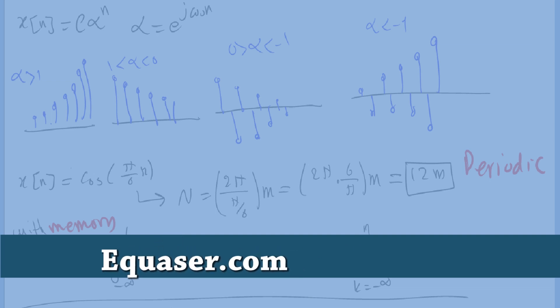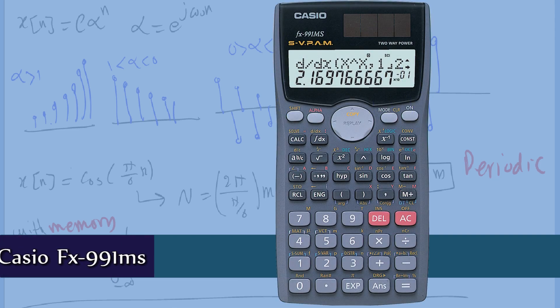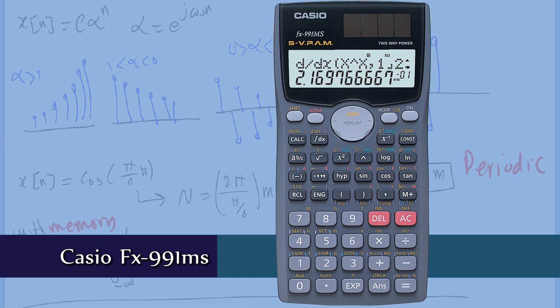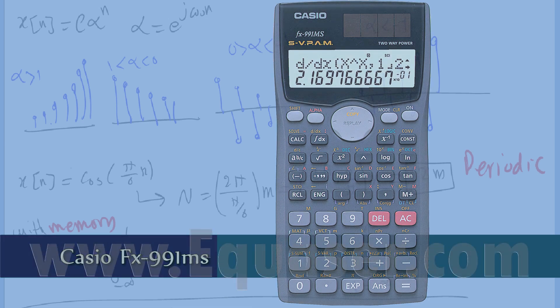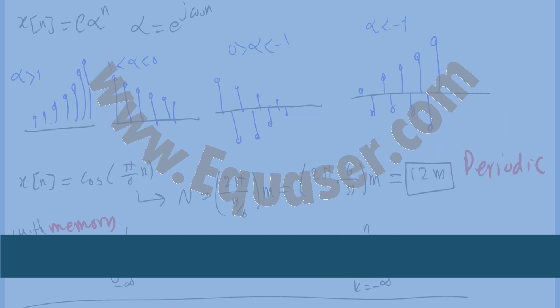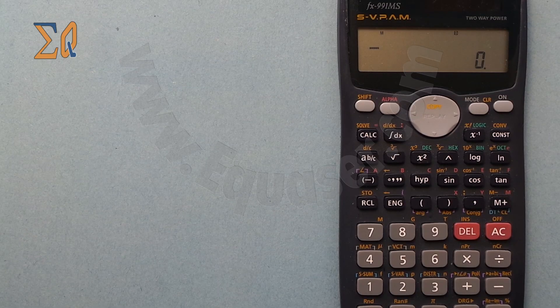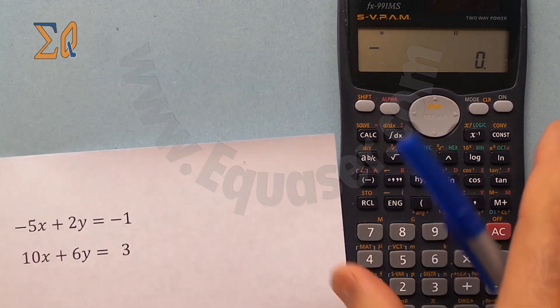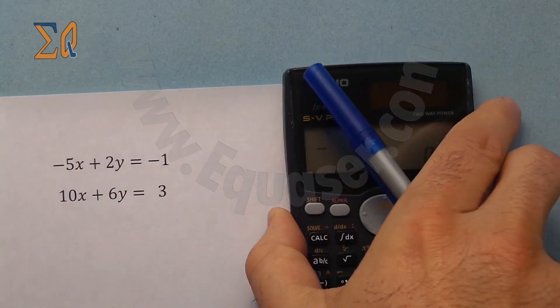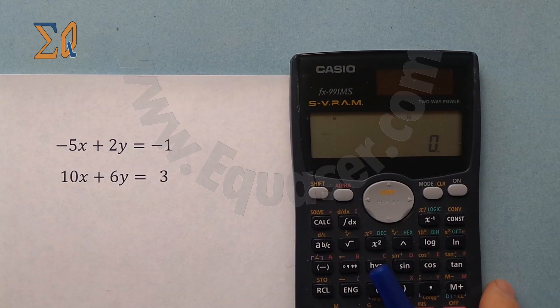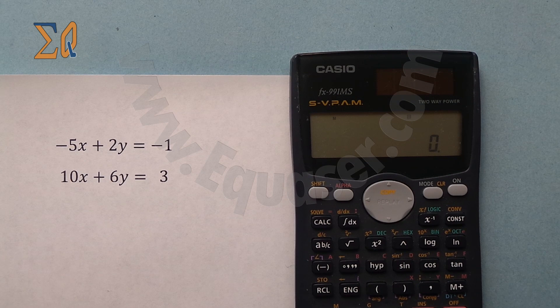Welcome to a tutorial from Equazor.com. This tutorial covers Casio's scientific calculator FX991MS. Hello and welcome back. In this tutorial we are going to solve systems of equations with two and three unknowns.